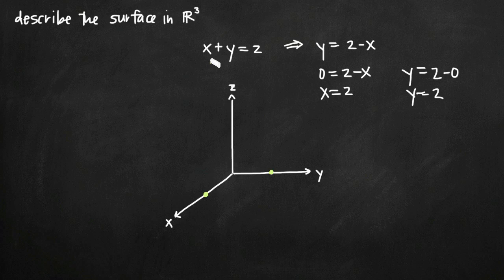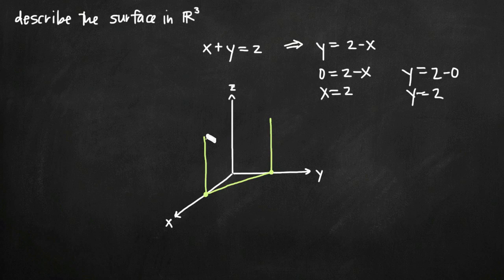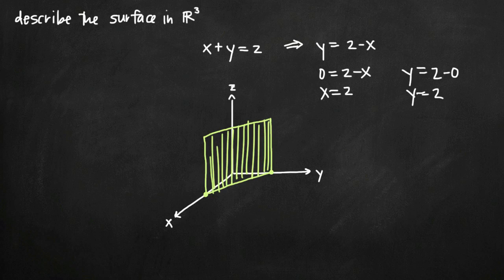Because our equation x plus y equals 2 is never going to intersect the z-axis but intersects these two points, we know our plane connects these two points. We draw two lines parallel to the z-axis — perfectly parallel because our plane will never intersect the z-axis. If we wanted to describe this verbally, we'd say it's a perfectly vertical plane. We know it's perfectly vertical because it's never going to intersect the z-axis; if it were tilted at all, it would intersect the z-axis at some point.